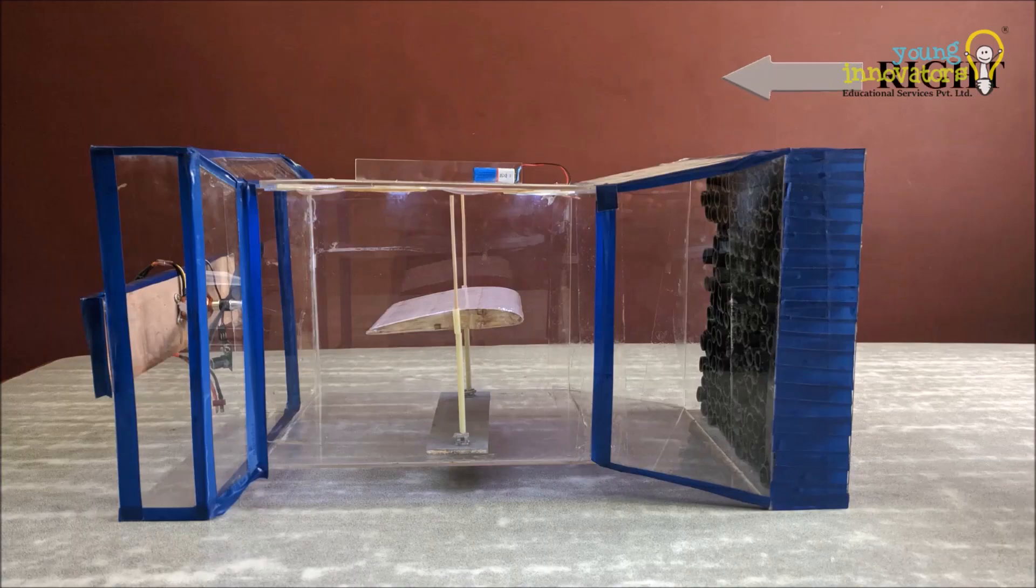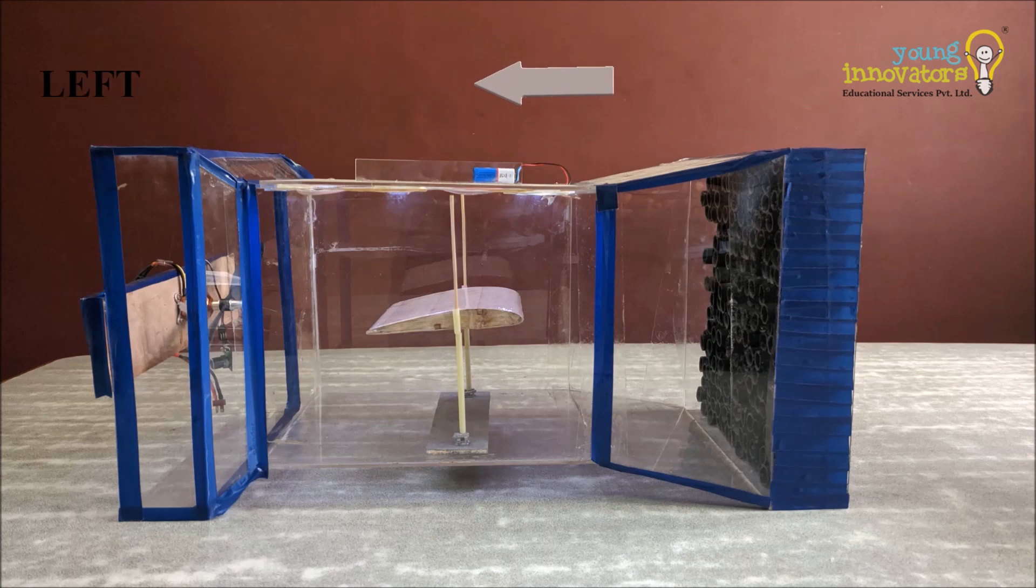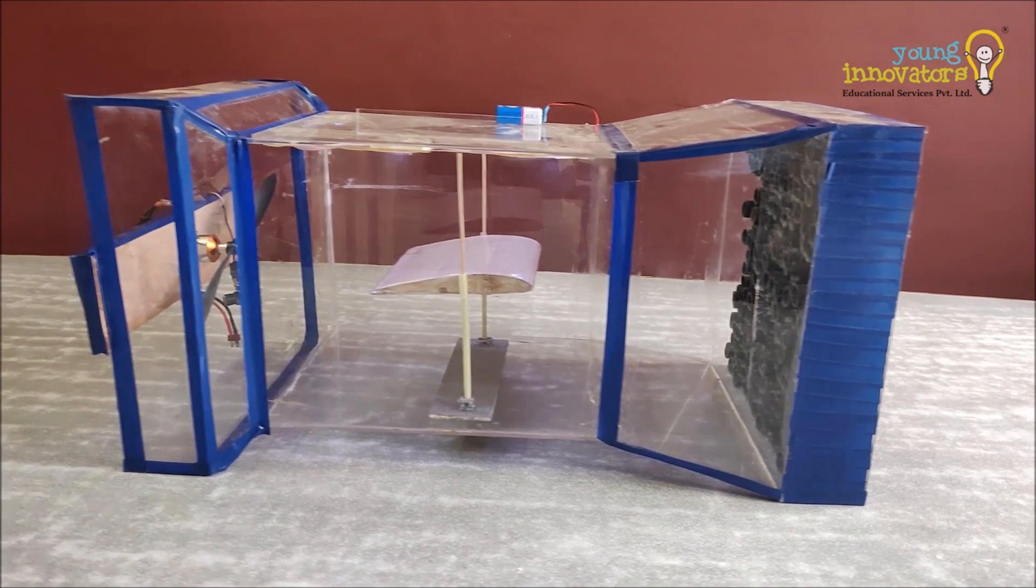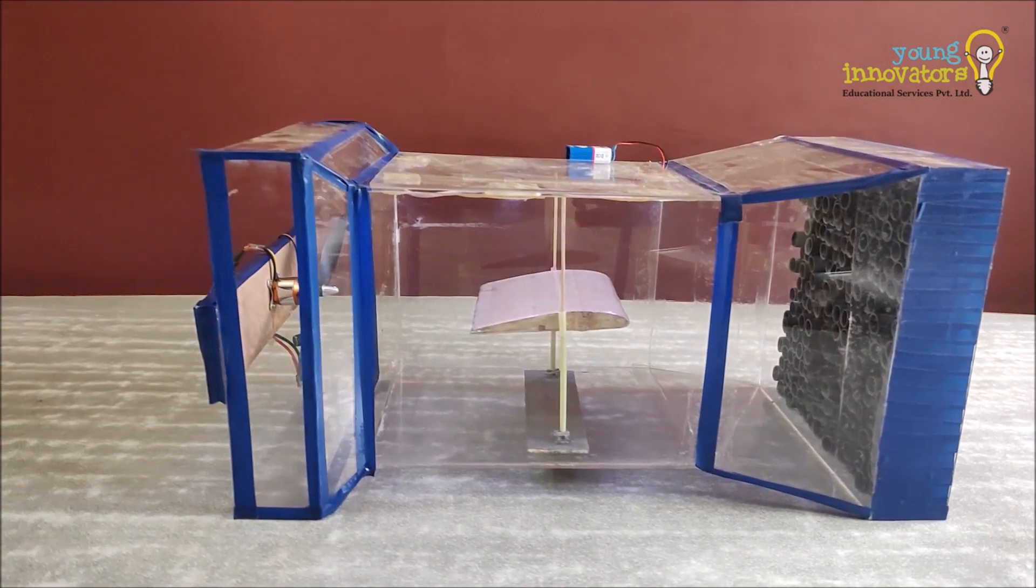The air flow in the subsonic wind tunnel is from right to left. The largest part at the right of the wind tunnel is called the bell mouth. The flow straighteners are placed at the entrance of the bell mouth.